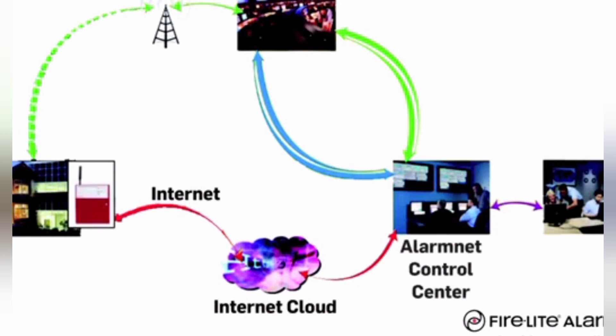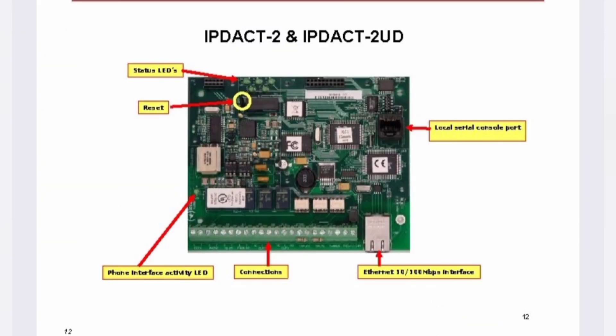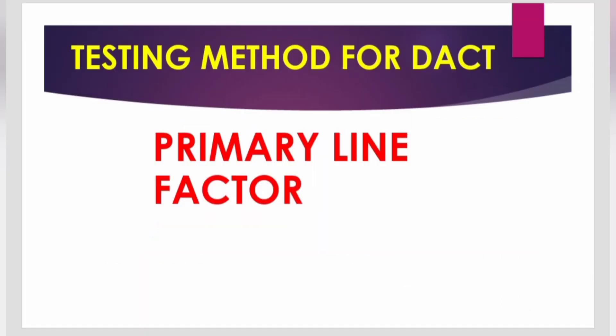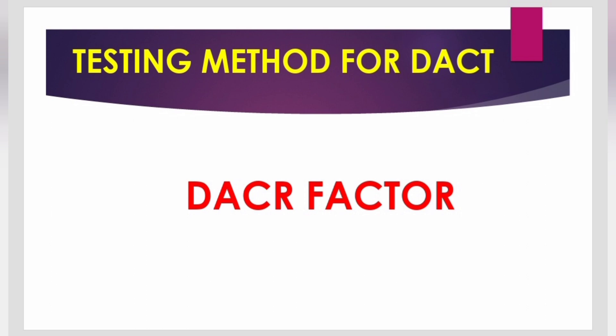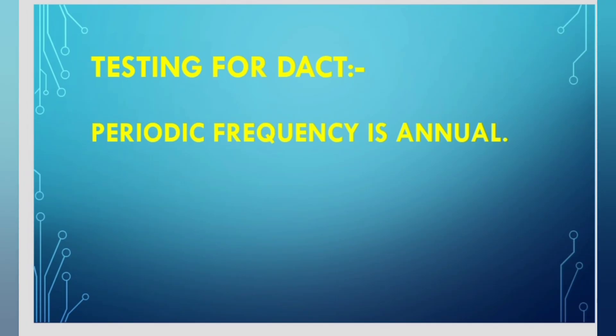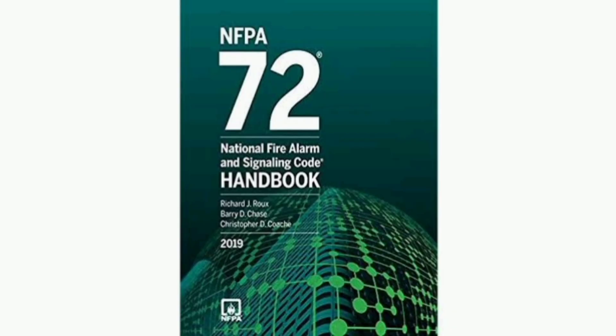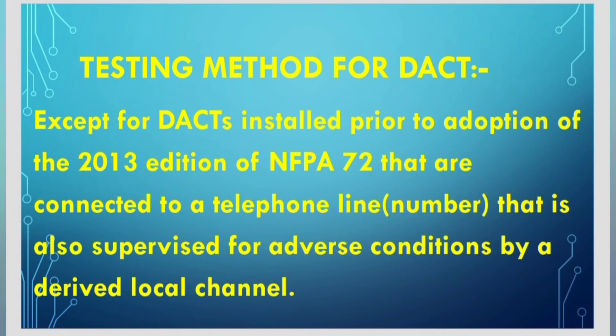There are three factors involving the testing method for the digital alarm communicator: first, the primary line factor; second, the secondary line factor; third, the digital alarm communicator receiver factor. When doing testing for the digital alarm communicator, the periodic frequency applies as discussed.